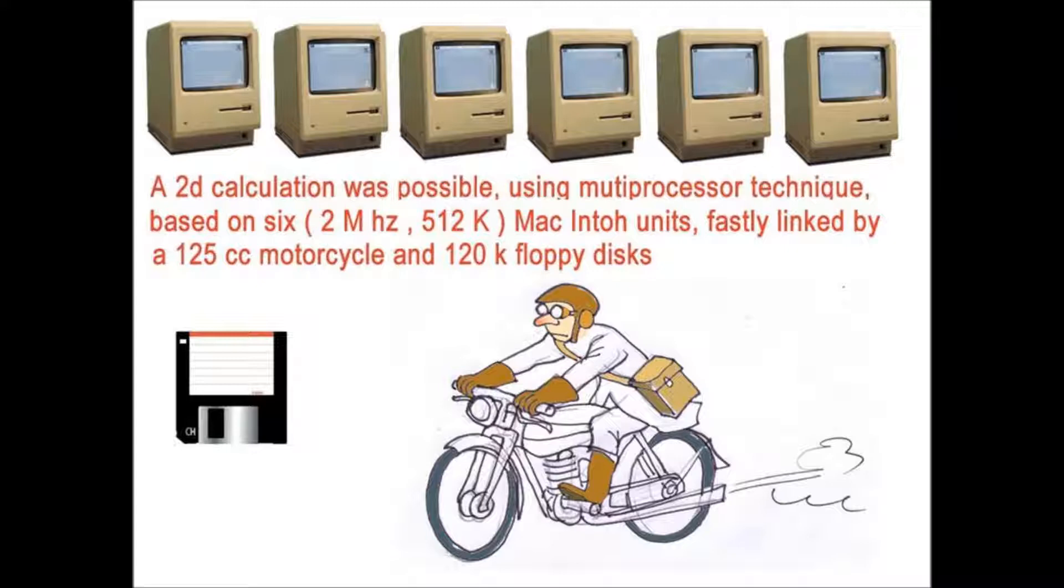We used Macintosh units with 2 MHz clock and 500K for central memory. So it was absolutely impossible to run two-day simulation with such machines. So Lebrun used six machines and we were one of the first to operate multiprocessor techniques